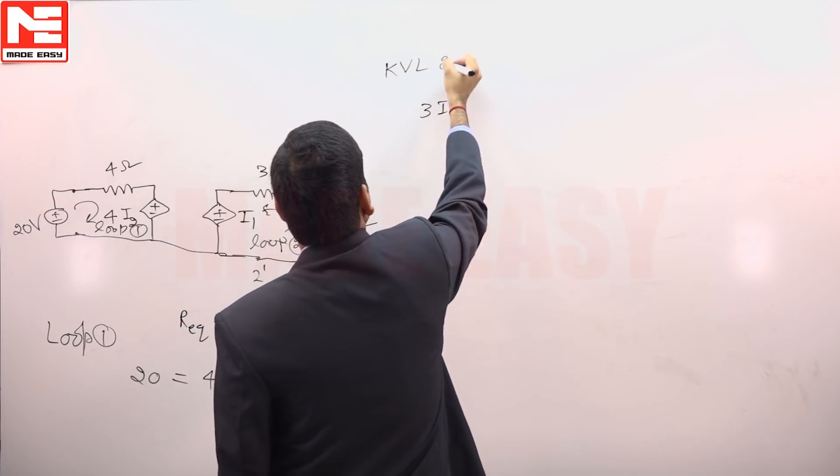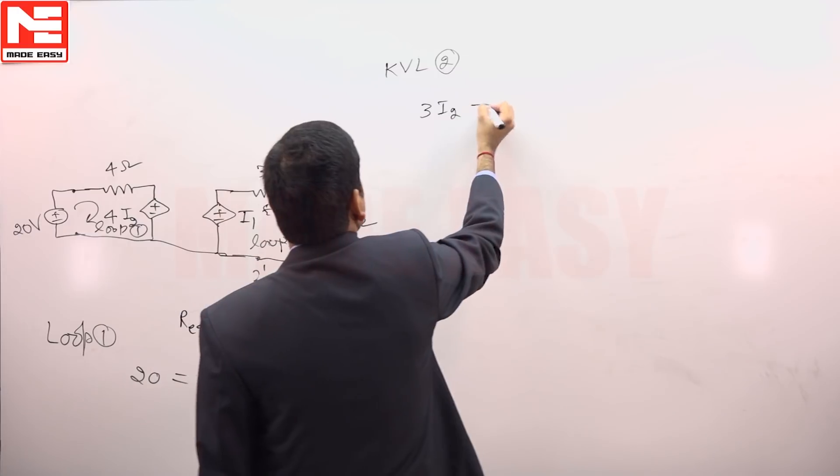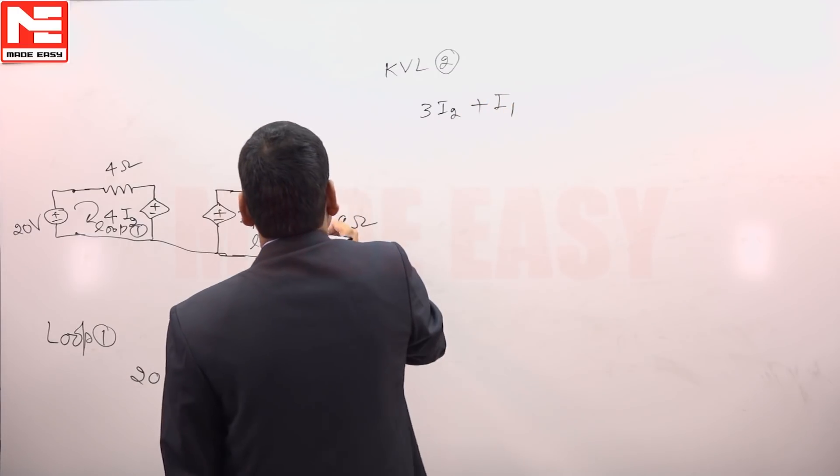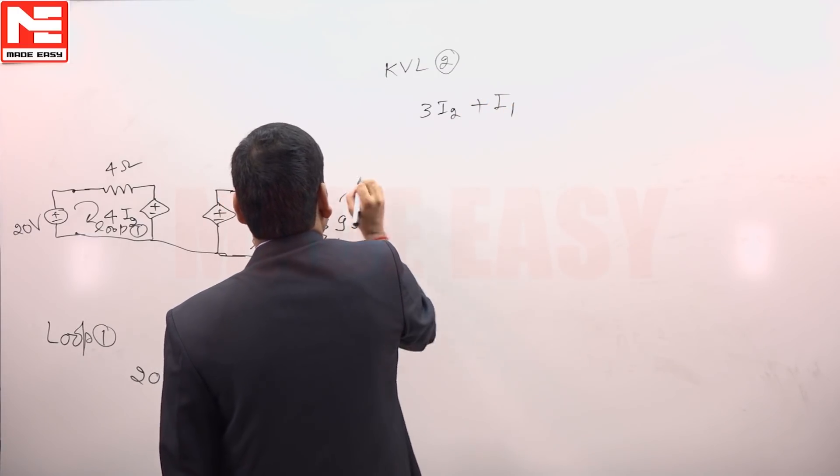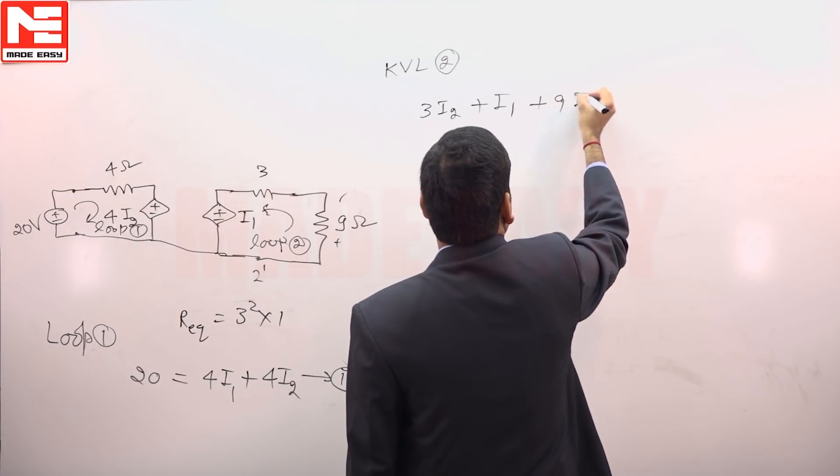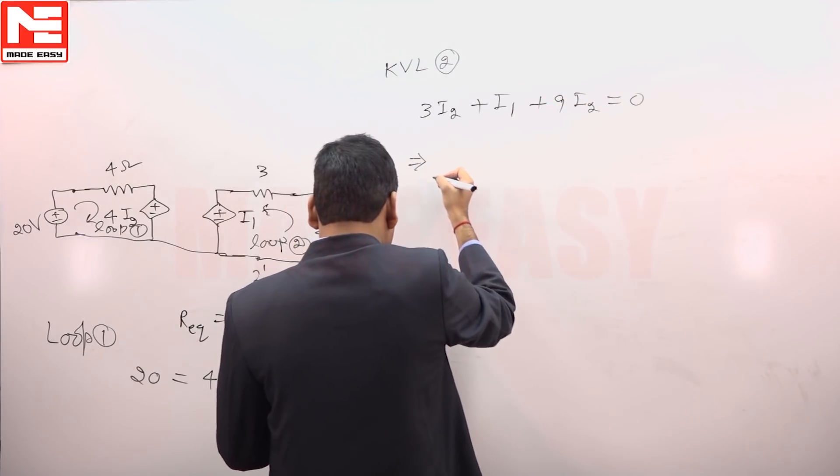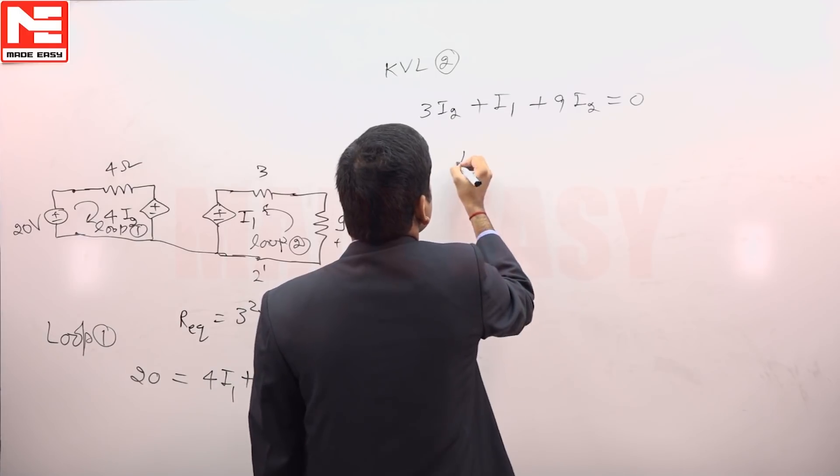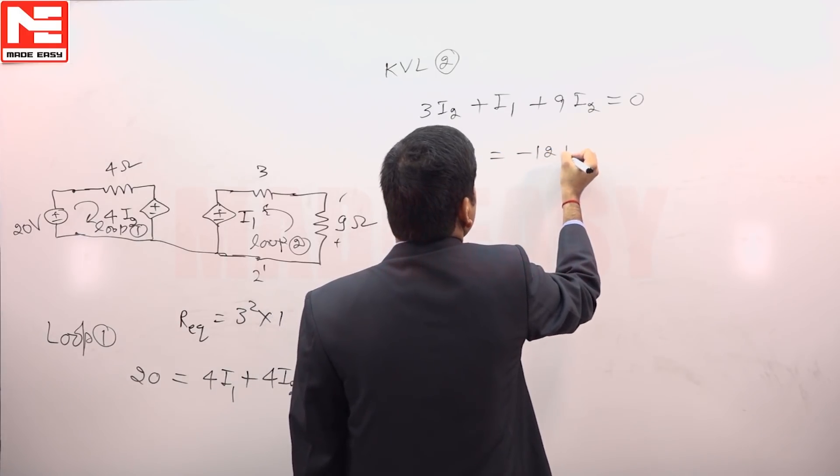KVL in loop 2: 3 into I2 plus I1, and current is entering like this, so plus 9 I2 is equal to 0. So I am solving the relation between I1 and I2: I1 is equal to minus 12 I2.